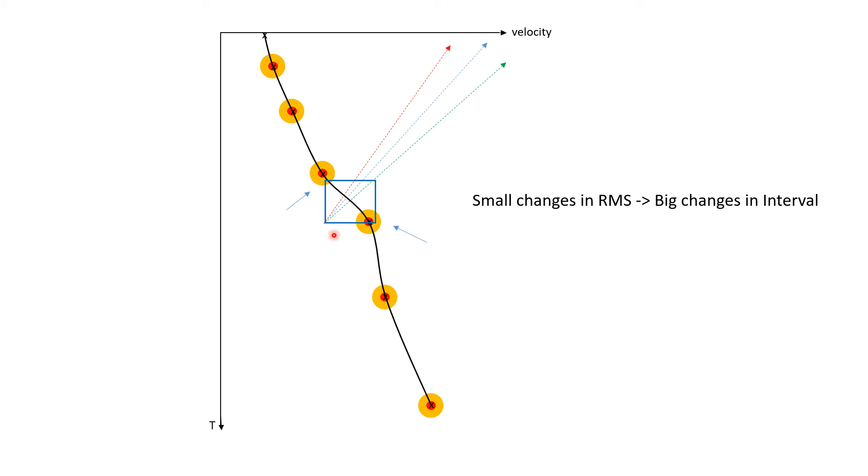Well, here, I made slightly different picks up top and slightly different picks here. Draw the corner of the box in green, and now I have a much faster interval velocity. So, you can see how small changes in picking RMS can lead to big changes in interval velocity.